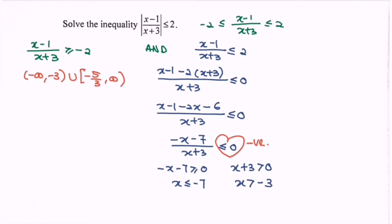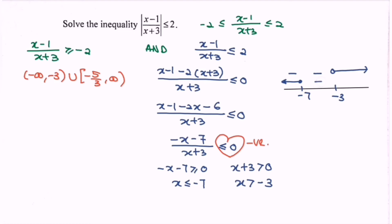Illustrate the situation on a real number line with two values: negative 7 and negative 3. For negative 7, x is less than or equals to negative 7. Empty circle for negative 3, where x is greater than negative 3. The sign analysis gives four negatives in regions. Multiplying the signs: negative times negative times negative equals negative, then positive, and finally positive times negative equals negative.